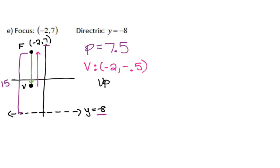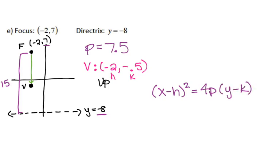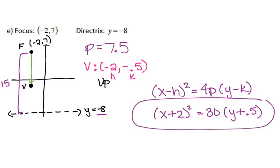Now I have my directrix, vertex, and focus. Looking at the layout, this parabola is opening up because it goes from the vertex towards the focus, which is upward. I have my h and k from my vertex, I have my p, I know the direction, so I can write the equation. Since I'm opening up, I use x minus h quantity squared equals 4p times y minus k. My h was negative 2, so x minus negative 2 becomes x plus 2 quantity squared, equals 4 times 7.5 which is 30, times y minus negative 0.5 which becomes y plus 0.5.